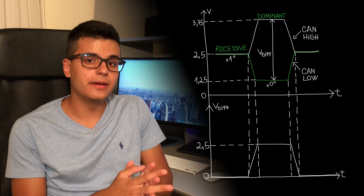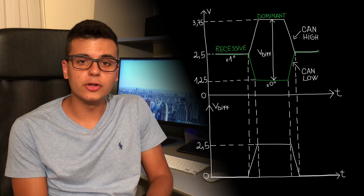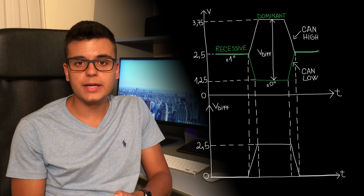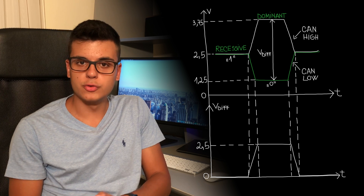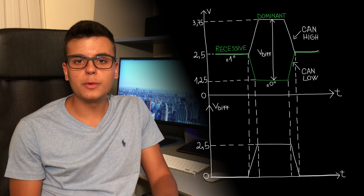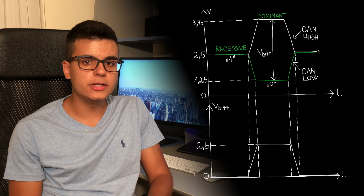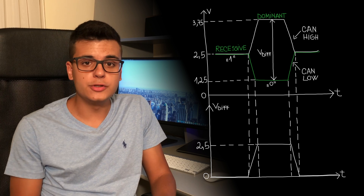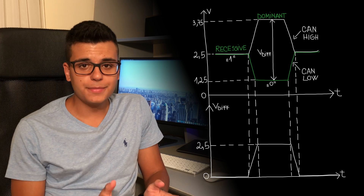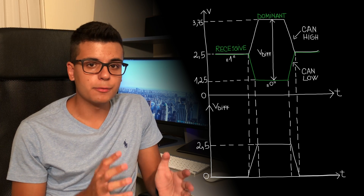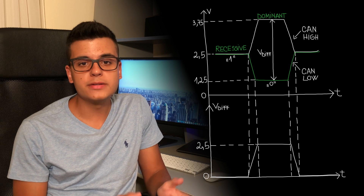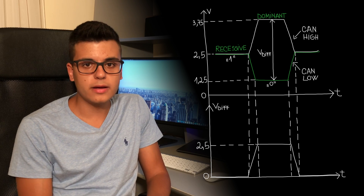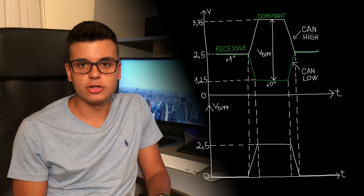The dominant level means that the CAN high line goes to a higher voltage whereas the CAN low line goes to a lower voltage, therefore creating about a 2.5 volt difference between the two lines. Something else to keep in mind is that the recessive level means a logical 1 and the dominant level means a logical 0.